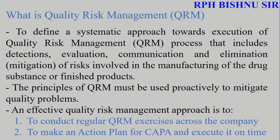The main principles to mitigate quality problems: an effective quality risk management approach is to conduct regular QRM exercises across the company, to make an action plan for CAPA — corrective action and preventive action — and to educate on time.